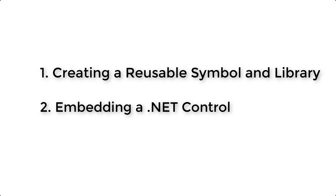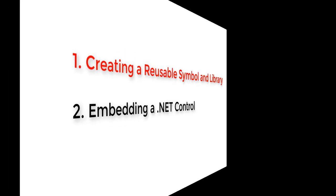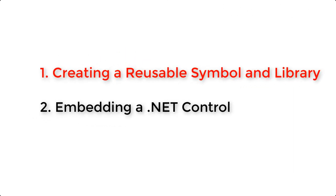There are two things we're going to be covering today. First is creating a reusable symbol, adding it to a library, and then we're also going to be covering embedding a .NET control into your VGO XL project. So we're going to start with number one: creating a reusable symbol and library.